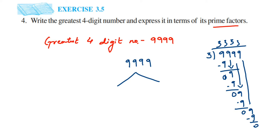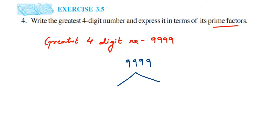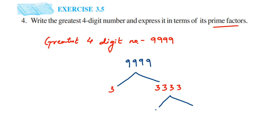So splitting 9999 gives us 3 and 3333. The 3 cannot be split further as it is already prime. Now we split 3333 — it definitely goes in the three times table. Dividing 3333 by 3, the same way we did for 9999, we get 3 and 1111.